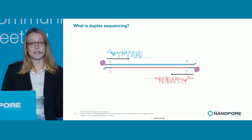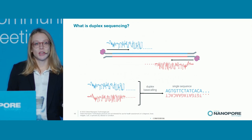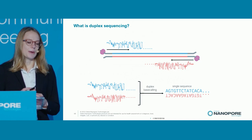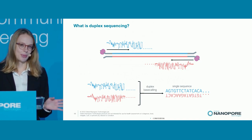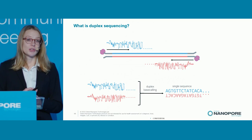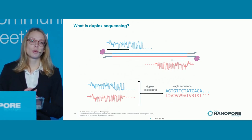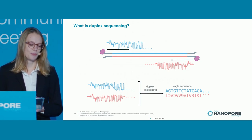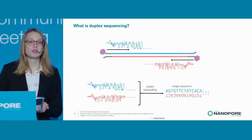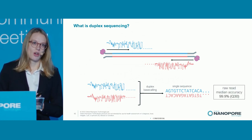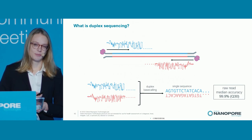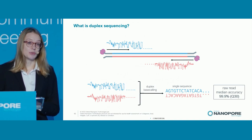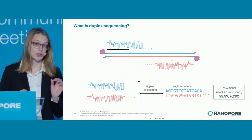We could treat these as two individual reads and call it a day, but we know that they come from the same molecule and therefore should represent the same sequence of nucleotides — not including things like modifications that might be different. So what we can do instead is duplex base calling, where we incorporate information from both signals to produce one sequence output, one base call. When we do this, we find a massive improvement in raw read accuracy over base calling the individual signals by themselves — an order of magnitude reduction in error rate, bringing read accuracies up to Q30, or 99.9%.